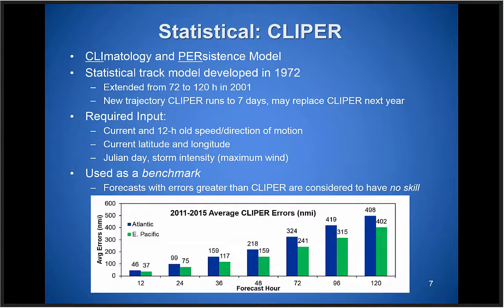CLIPER was originally developed in the early 1970s and runs out to five days. There's also a new trajectory CLIPER that runs out to seven days. It's very simple, using just the current and 12-hour-old speed and direction of motion, current latitude and longitude, day of the year, and intensity — about six parameters — to predict a tropical cyclone track based on previous behavior. This is simply used as a benchmark: if you have forecast errors larger than CLIPER, you essentially have no skill. The skill diagrams later in the presentation will show skill relative to CLIPER performance.